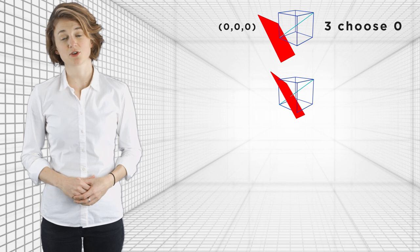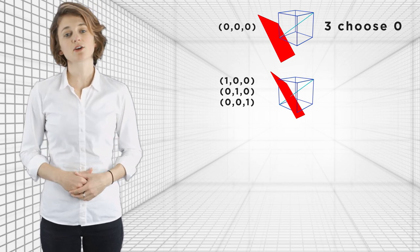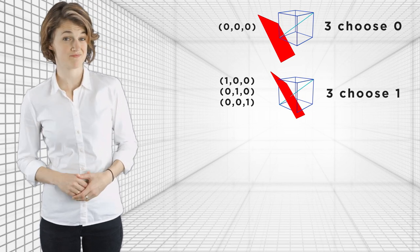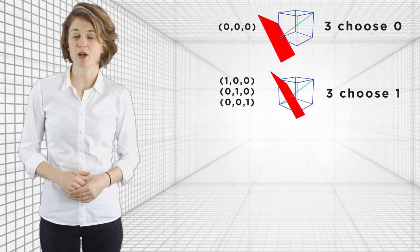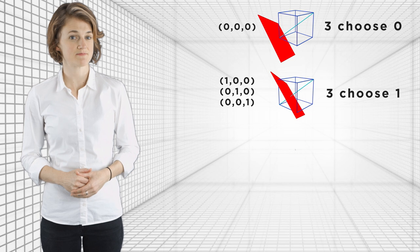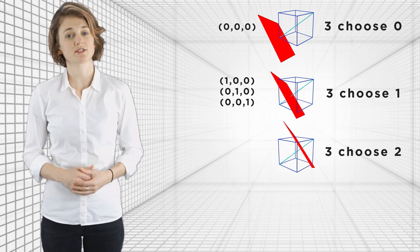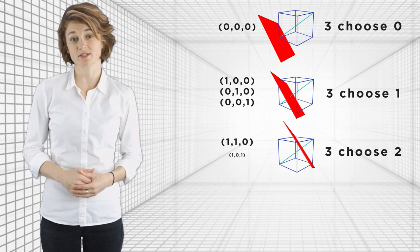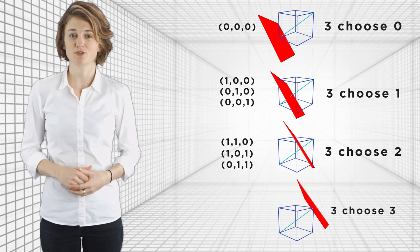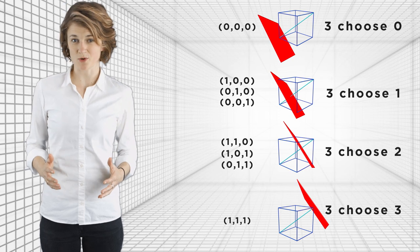The next diagonal slice goes through 1, 0, 0; 0, 1, 0; and 0, 0, 1. It corresponds to 3 choose 1, because there are 3 coordinates and 1 of them is a 1. The vertices correspond to all the ways to choose the position of 1 among the three coordinates. The next diagonal slice, corresponding to 3 choose 2, contains all the vertices with exactly two 1s: 1, 1, 0; 1, 0, 1; and 0, 1, 1. The final slice, corresponding to 3 choose 3, contains all the vertices with exactly three 1s, which is just 1, 1, 1.